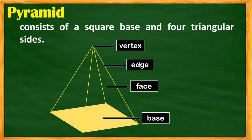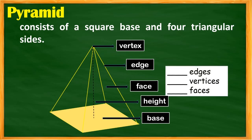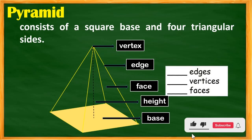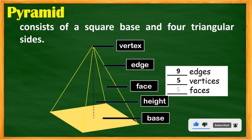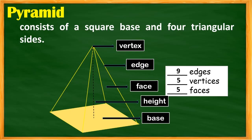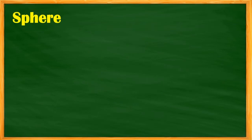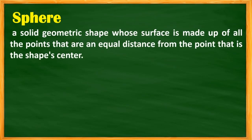If the base of a pyramid is a rectangle, it is called a rectangular pyramid. For a square pyramid, the number of edges is 9, the number of vertices is 5, and the number of faces is 5.